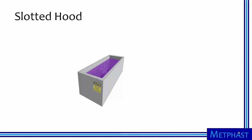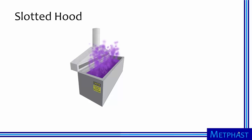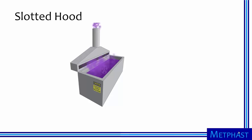The slotted hood is a special type of capturing hood. Often, slotted hoods are used to ventilate tanks. In this tank, hexavalent chromium is being used to plate chrome onto the wheels of a car, producing highly toxic vapors. A slotted hood can be used to capture these vapors. The slot ensures that air velocity is sufficient over the entire surface of the tank for good capture.